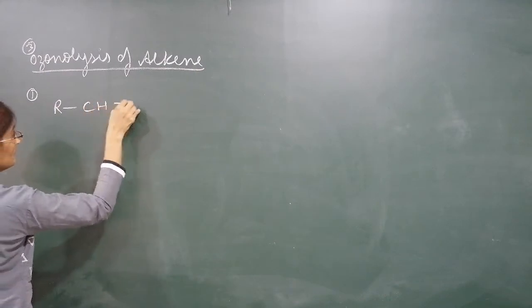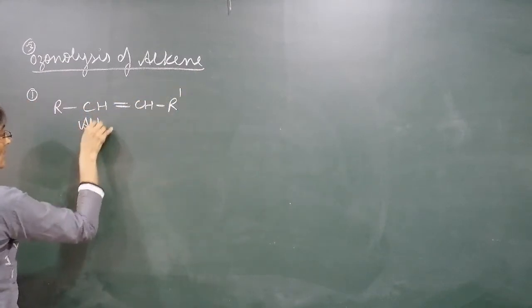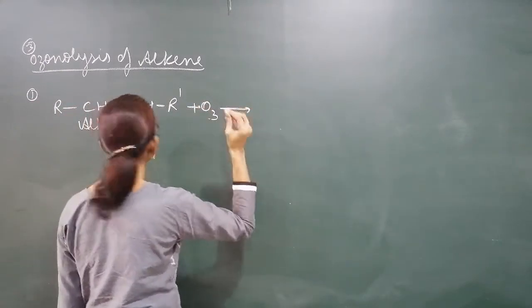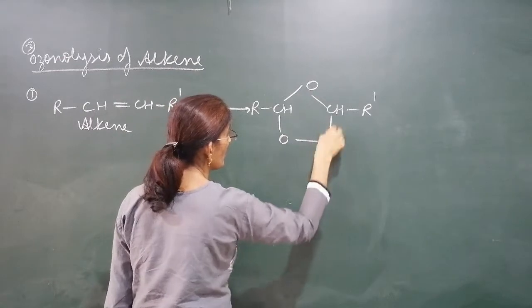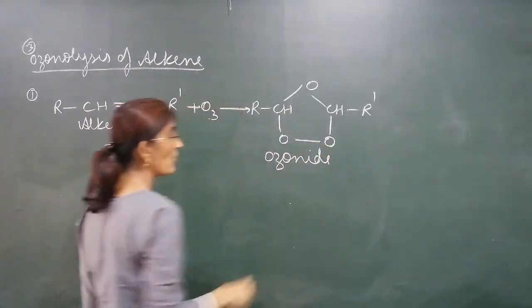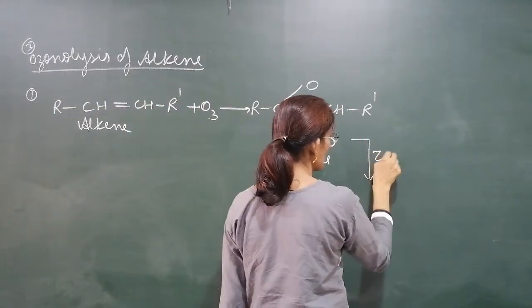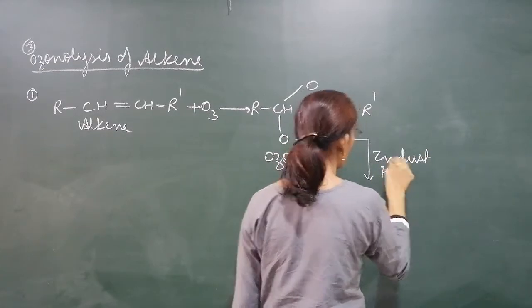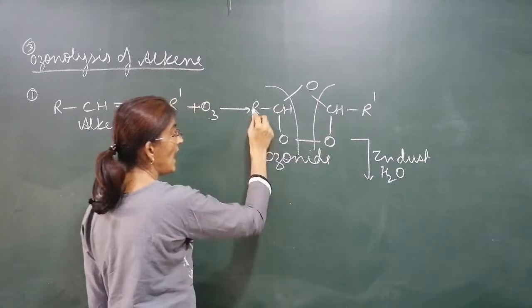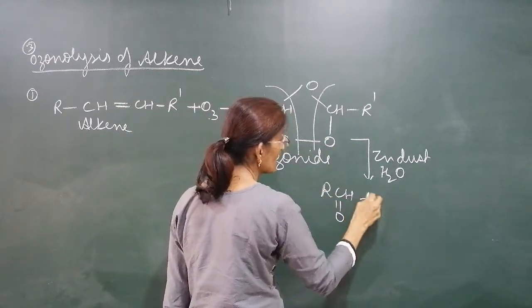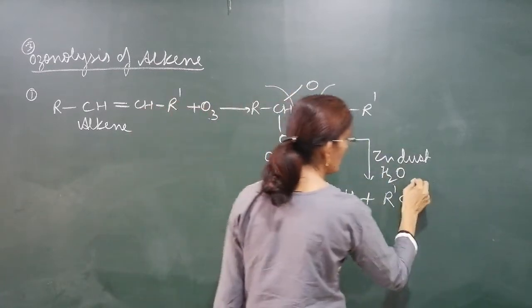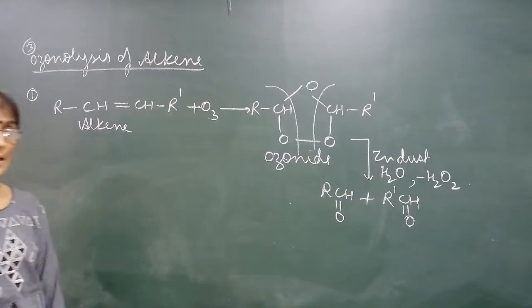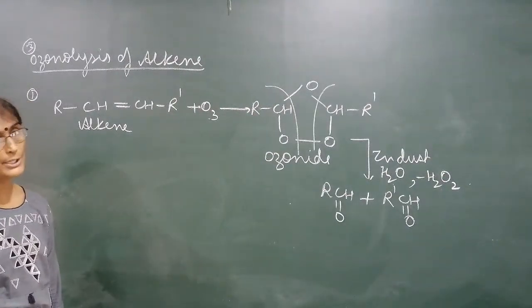In ozonolysis, the alkene is first treated with ozone to form an ozonide intermediate. The ozonide is then treated with zinc dust and water, causing the bond to break. This gives RCHO and R'CHO - aldehydes are formed. Water combines with the oxygen to give hydrogen peroxide as a byproduct. So depending on the type of alkene, we get aldehydes or ketones.